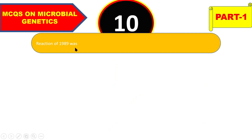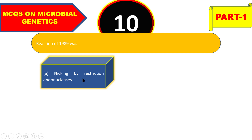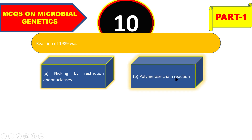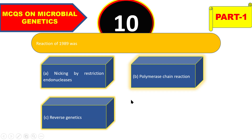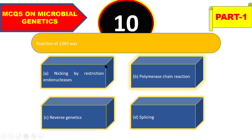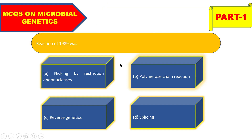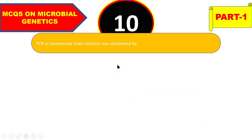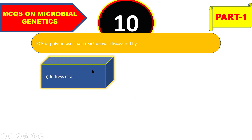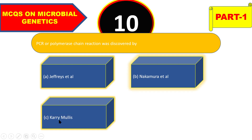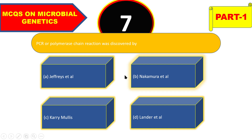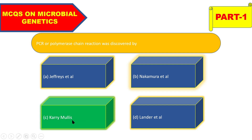Next question: the reaction of 1989 was nicking by restriction endonucleases, polymerase chain reaction, reverse genetics, or splicing? The right answer is polymerase chain reaction. Following that, PCR was discovered by Jefferies, Nakamura, Karimoulis, or Lunder? The right answer for the discovery of polymerase chain reaction is Karimoulis.